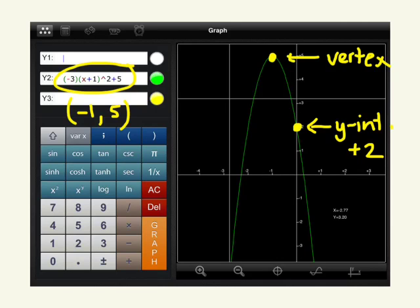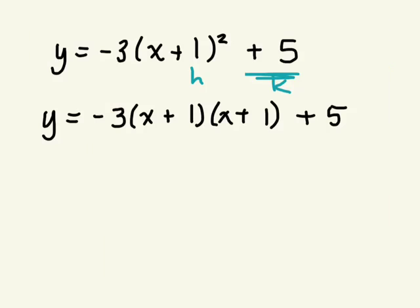So when we put it in standard form, it should say at the very end, plus 2. That's your c value.